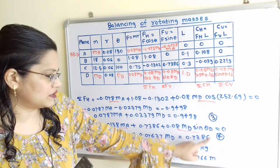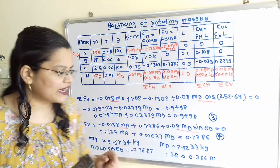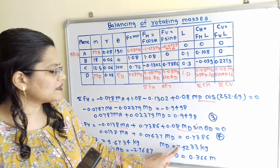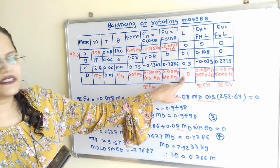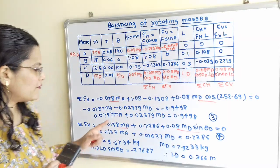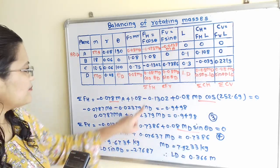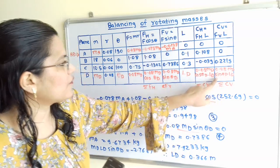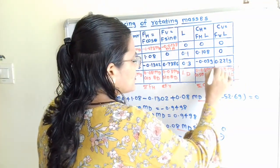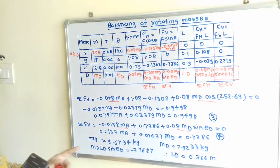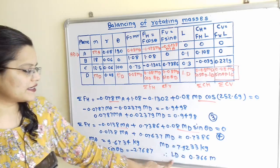Solving Equations 3 and 4 simultaneously, we get MA = 9.67 kg and MD = 7.9233 kg. Finally, substituting MD and θD into Equation 2: MD·LD·sin(θD) = −2.7687, with all values now known except LD. Solving gives LD = 0.366 m, which is the distance of plane D from the reference plane A.